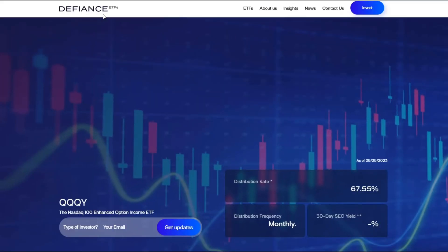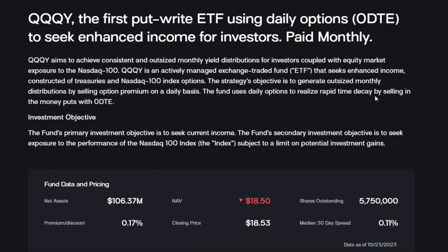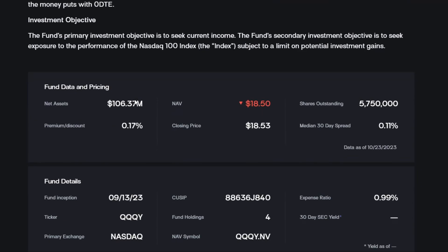QQQY is Defiance's NASDAQ 100 Enhanced Option Income ETF. This ETF sells options — specifically, they sell in-the-money puts at zero days to expiration. They don't sell weekly or monthly options, which avoids giving the market a chance to go to the wrong side of their option. It's a little bit easier to manage if you only write zero days to expiration options.